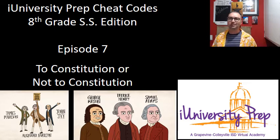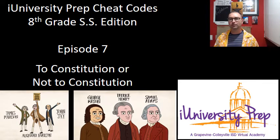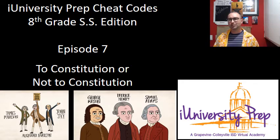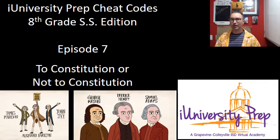That was the question facing our young nation as the Articles of Confederation was just a disaster — not a good form of government. So they held a Constitutional Convention, and they wrote an entirely new form of government. But the Constitution wasn't automatically passed — it had to go to the states for ratification, to be approved by all the states, so that it would become officially the government of the United States of America.